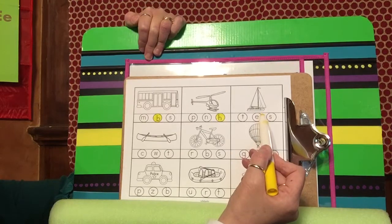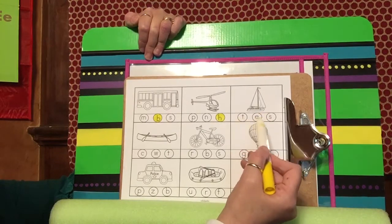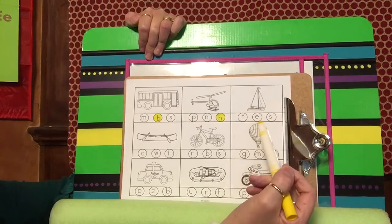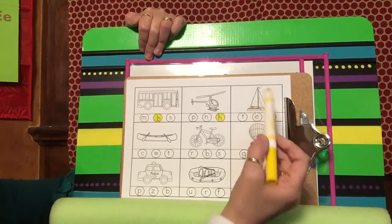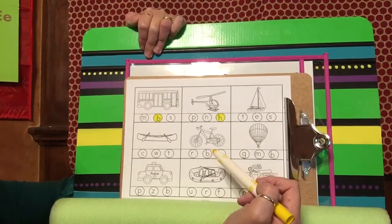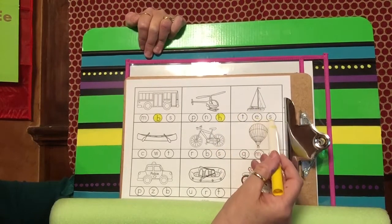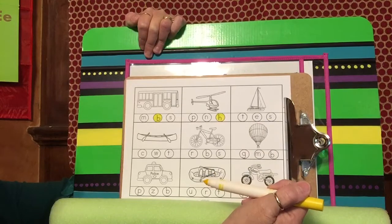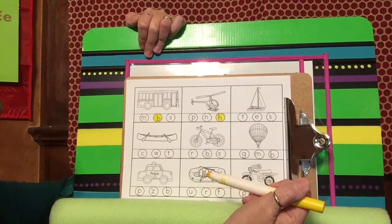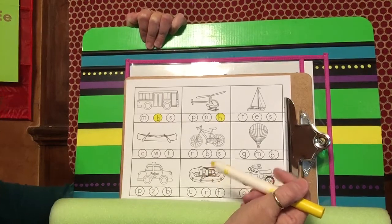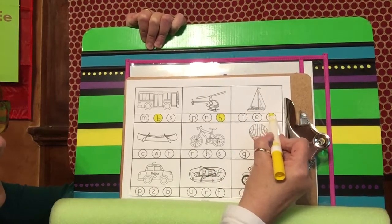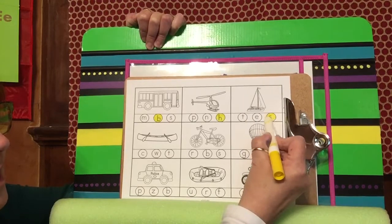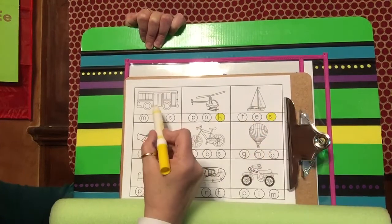This one right here is a type of boat, but there's no B for boat. That's a special kind of boat. It's called a sailboat. The wind blows the sails and makes it move. So which letter is at the beginning of sailboat? If you know it, shout it out. It is an S. S is at the beginning of sailboat.